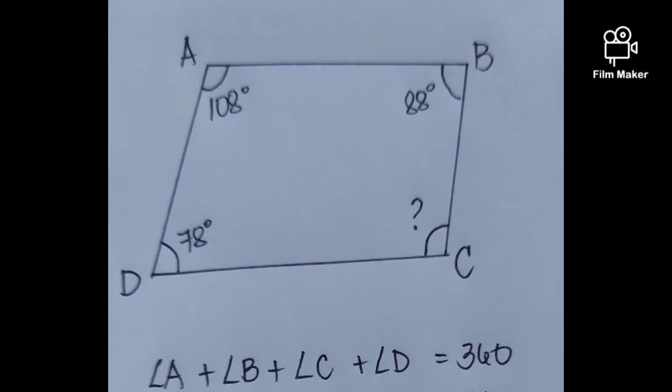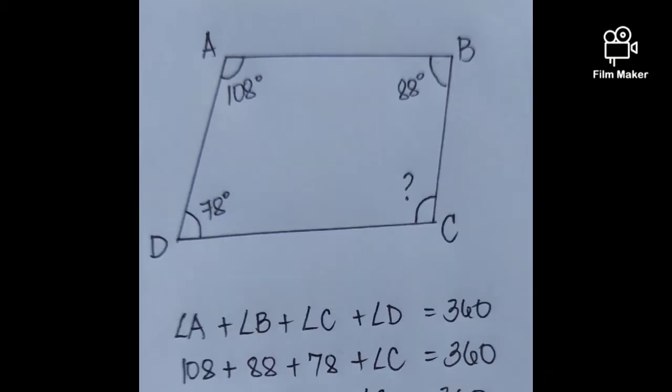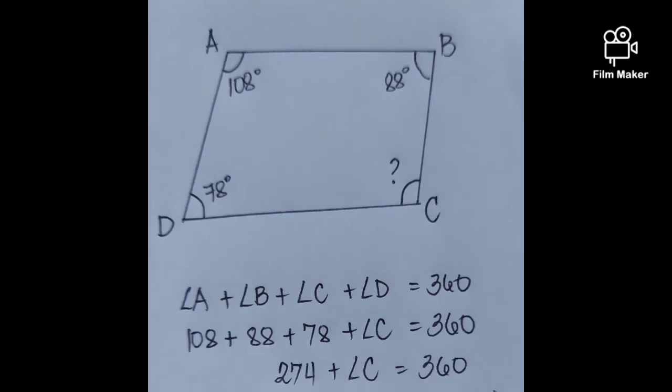So angle A plus angle B plus angle C plus angle D is equal to 360. Next, we substitute the values of all the angles. 108 plus 88 plus 78 plus angle C equals 360.